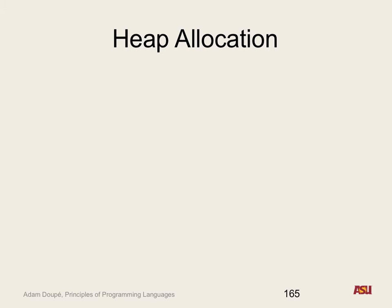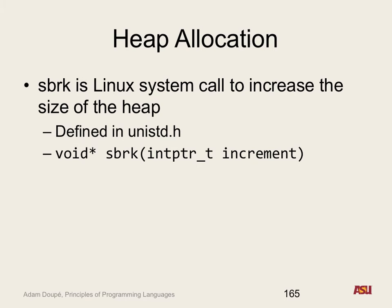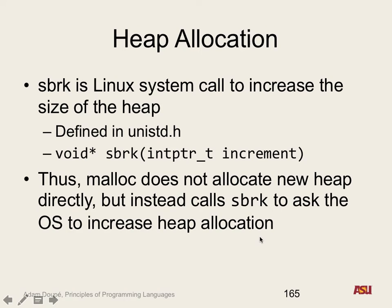The heap is a libc construct — free and malloc call libc — but where does that memory actually come from? Malloc and free are library functions that have to actually get memory from somewhere. sbrk is the Linux system call to increase the size of the heap. This tells the OS you need more heap space. So malloc doesn't directly allocate new heap; it calls sbrk to ask the OS to increase heap allocation. This is the primitive that all of this is based off of, and you can actually call sbrk yourself.